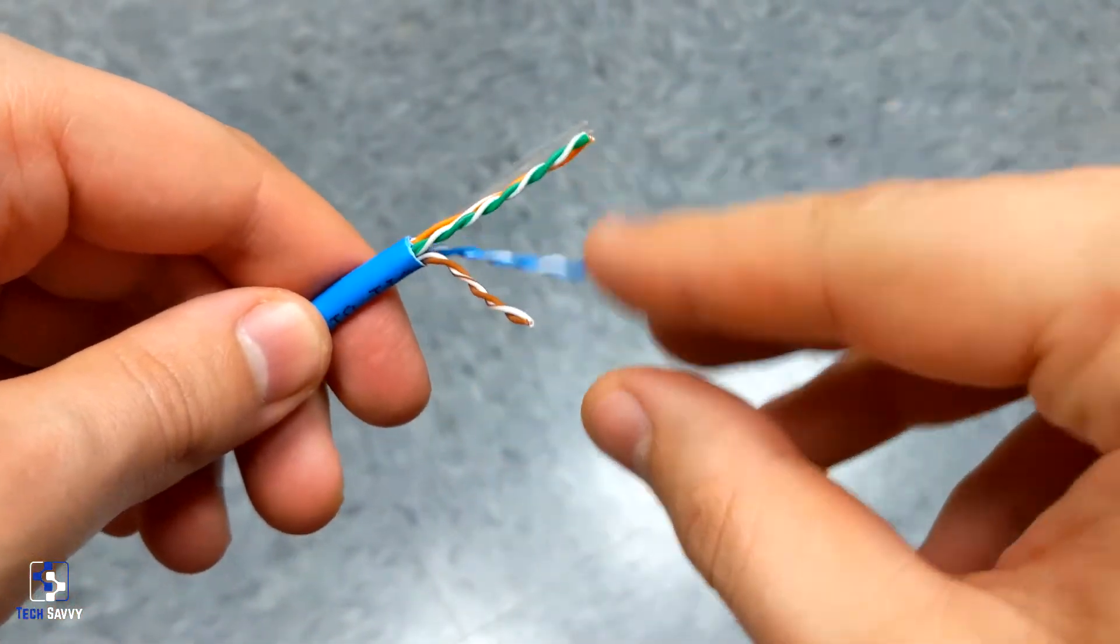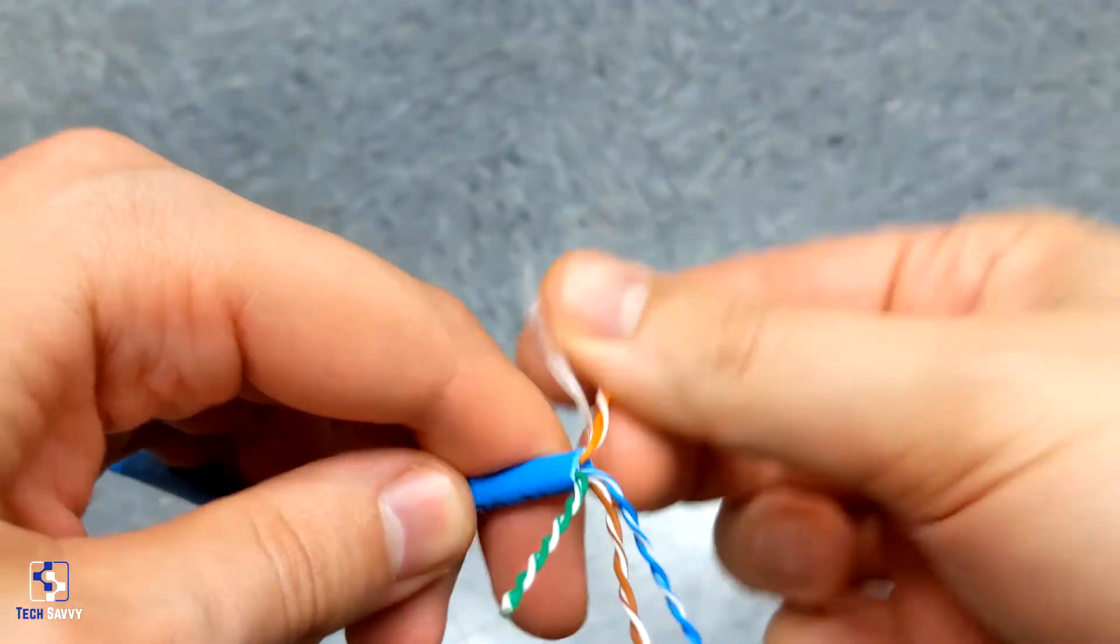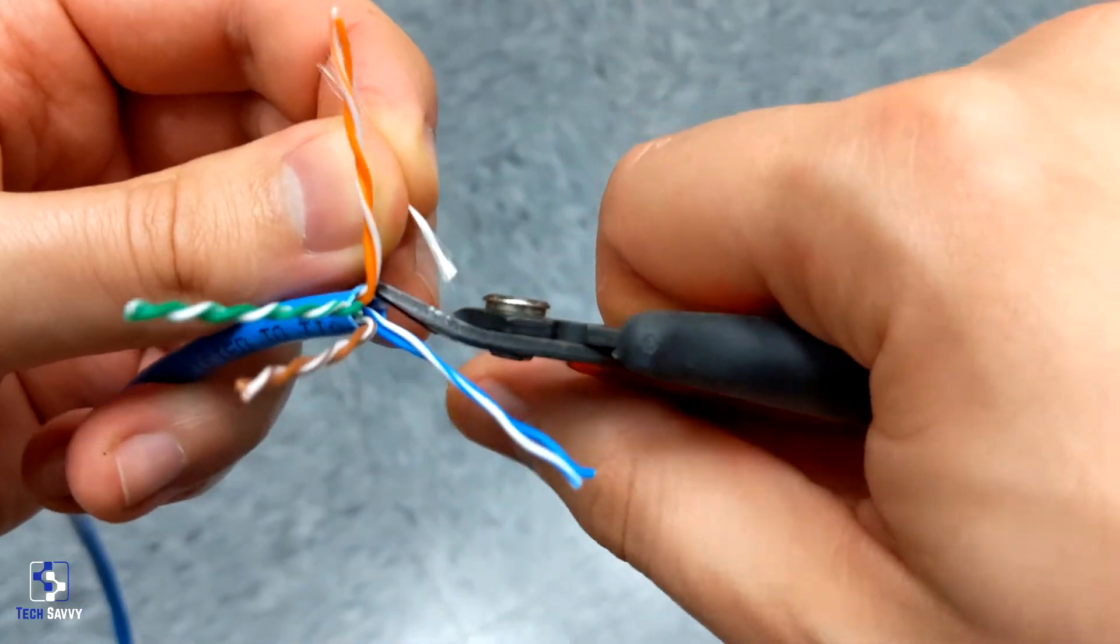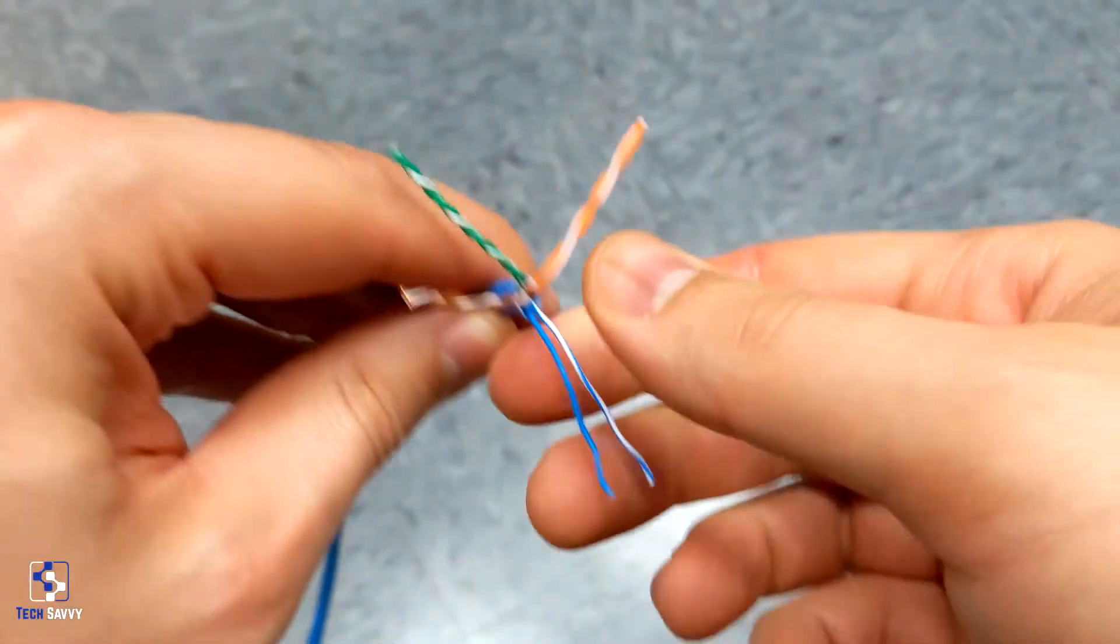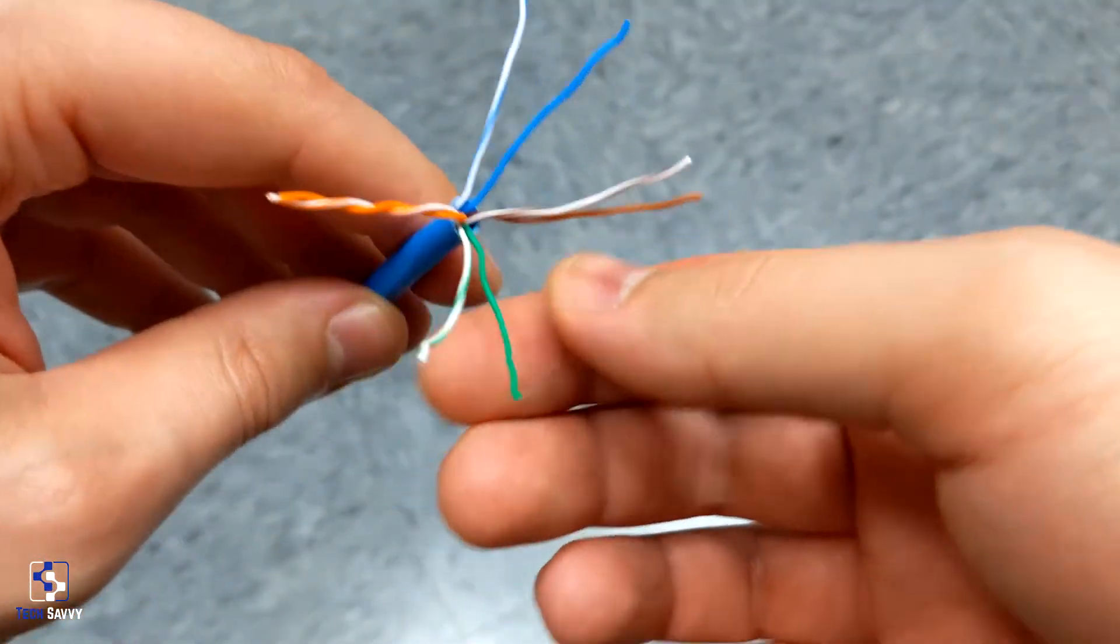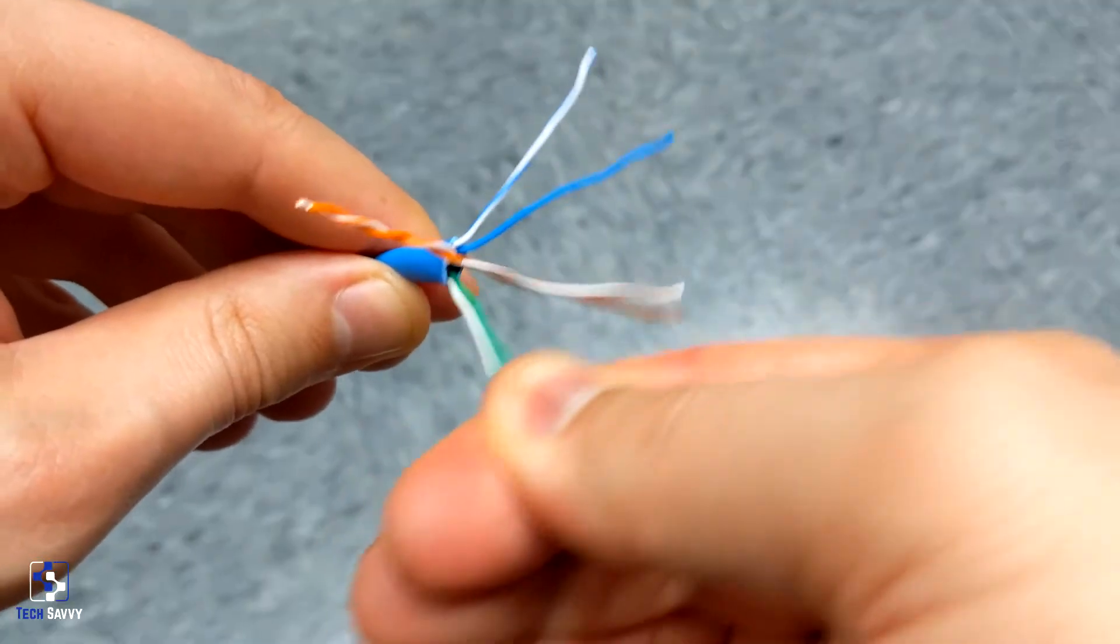Now there's going to be four pairs of wires inside. I'm going to be separating all of them into individual wires. If you use cable that has good copper wire in it, it's really easy to shape with a little bit of pressure and just wiggle it.